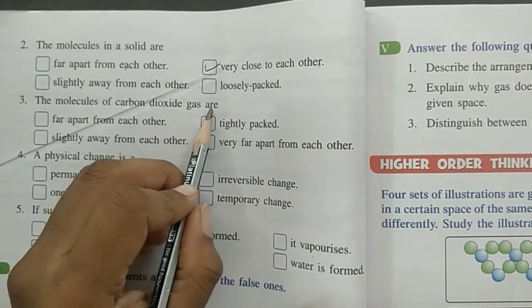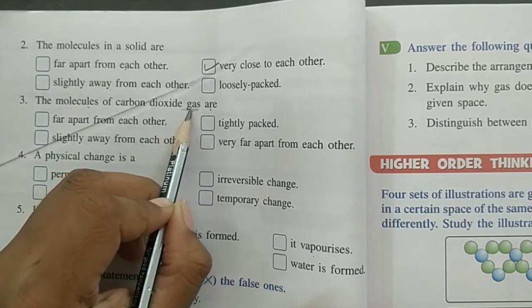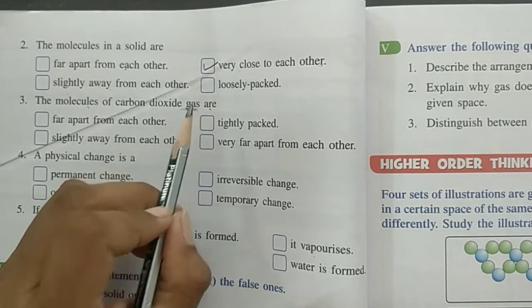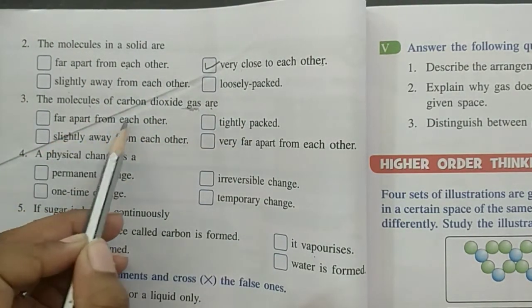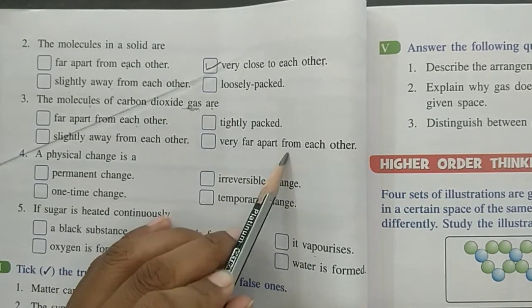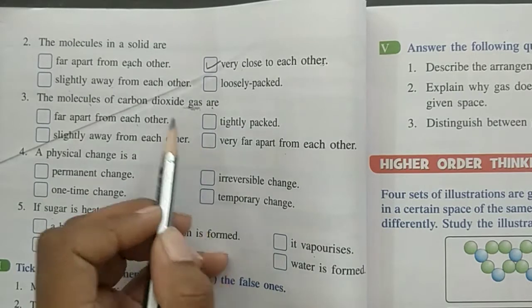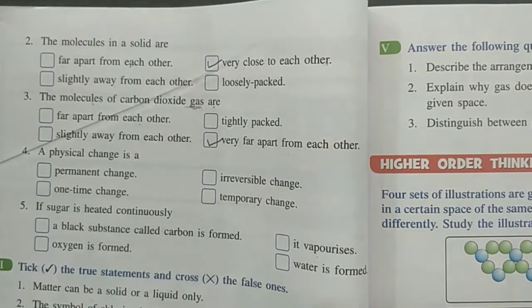Then the molecules of carbon dioxide gas are. We know that gas molecules are far apart from each other or very far, very far. So the answer is very far apart from each other. Then question number four.